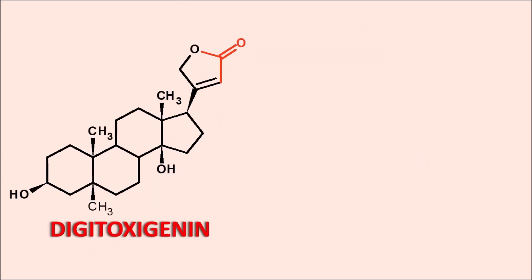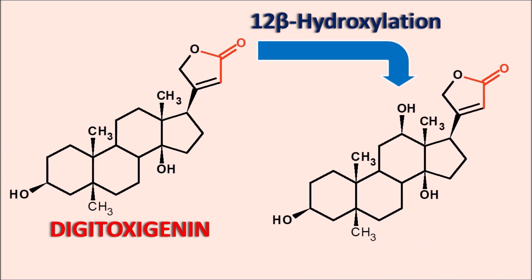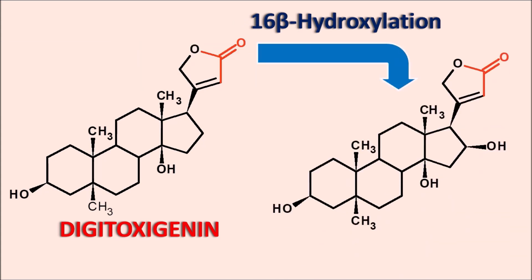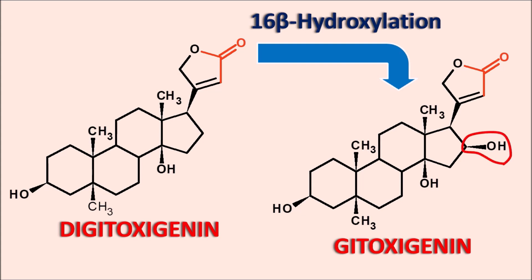Digitoxigenin is then converted into Digoxigenin or Gitoxigenin. Digoxigenin can be obtained by 12-beta-hydroxylation, giving a hydroxyl group at the 12th position. Similarly, 16-beta-hydroxylation gives Gitoxigenin with an extra OH group at the 16th position in beta configuration. In this way, from Digitoxigenin we can obtain Digoxigenin and Gitoxigenin by 12- and 16-beta-hydroxylations respectively.